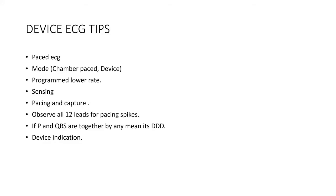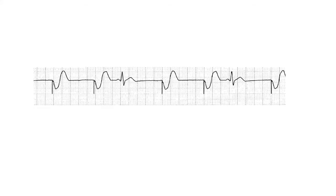To give some tips: first, looking at the ECG, make sure this is a paced ECG or not. Then look for the mode — which chamber is being paced — to determine if it's single chamber or dual chamber. Then calculate the lower programmed rate of that device, look for sensing, look for pacing and capture, and observe all leads for pacing spikes. If the P and QRS are together, it means this is a dual chamber device. Also go through the device implantation indications.